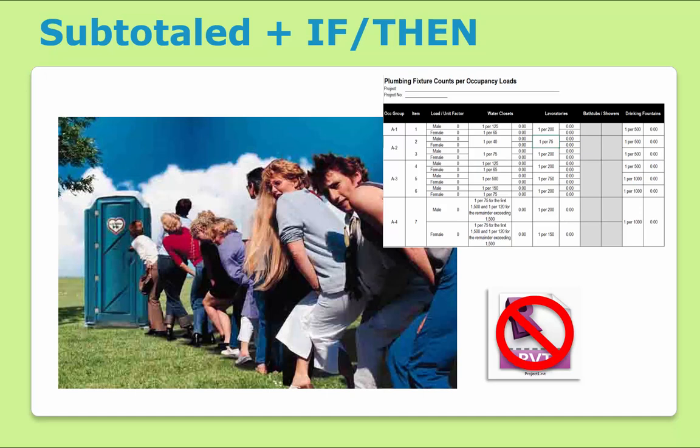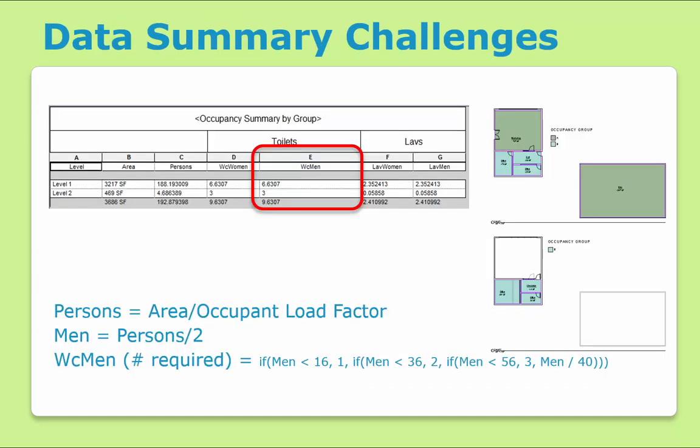In this video, we'll take a look at plumbing fixture count requirements as an example of this particular condition. You may be wondering about the nature of this problem, so let me explain. Most non-residential buildings have code requirements for the number of toilets, etc., that's based on the area usage within the proposed building.